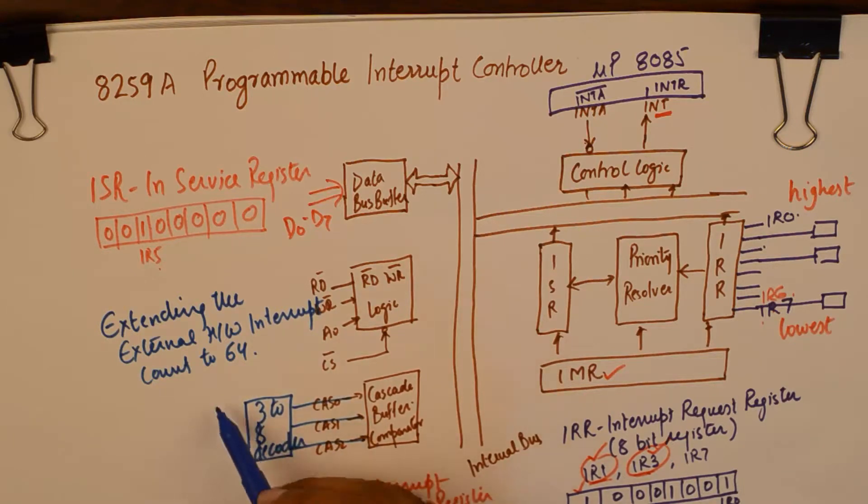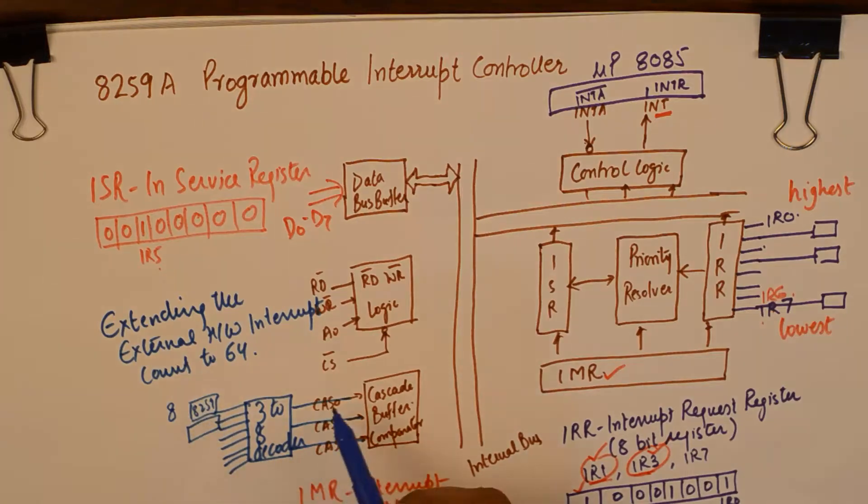If you connect a 3 is to 8 decoder here and the output of 3 is to 8 decoder is 8 select lines. We can connect an 8259 on each of these lines. So each 8259 here will give us 8 additional interrupts. So all in all will have 64 additional interrupts and they can be controlled using the value on cas0, cas1 and cas2.